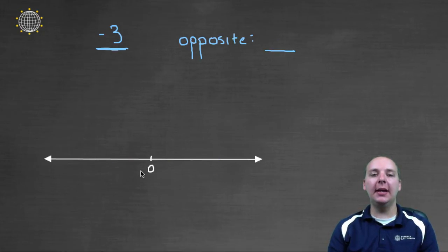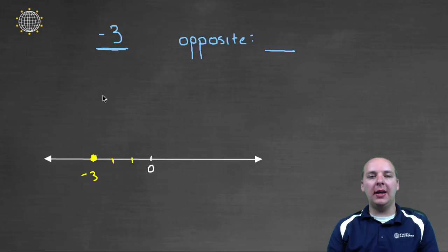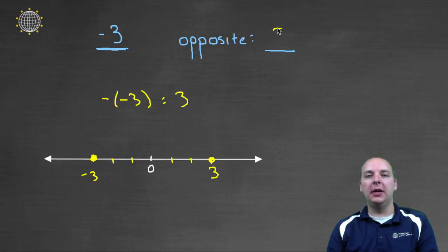Let's try it with negative three. Here's negative three. But what's the opposite of negative three? Well, if you had negative negative three, as we know this is the same as positive three. We go three units to the right. It's the same distance away, but on the other side of zero. So the opposite of negative three would be positive three.